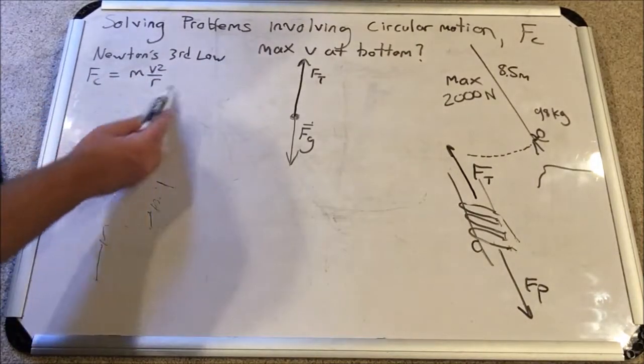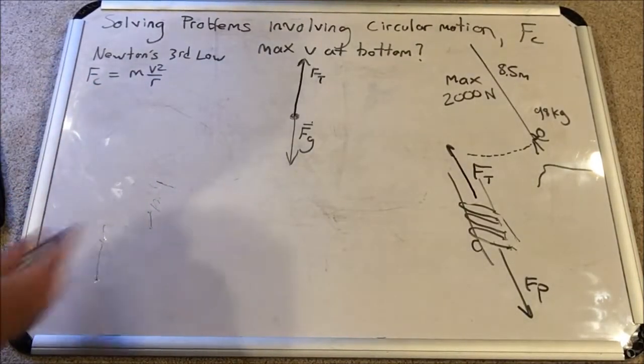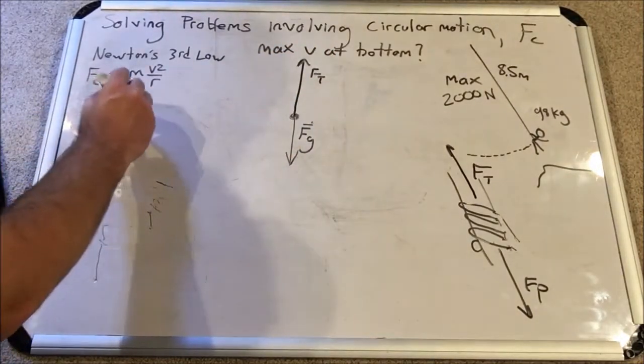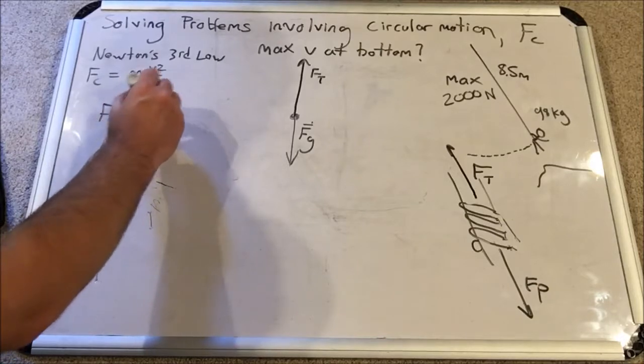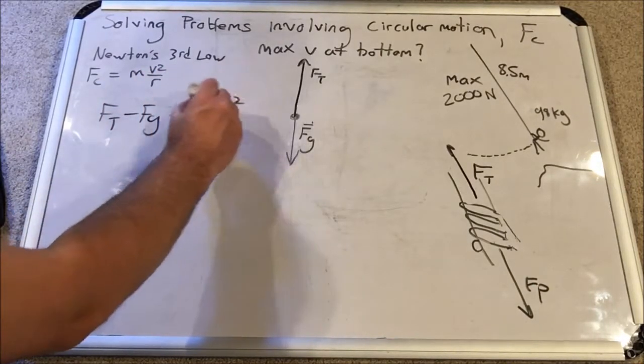Now, this is the equation we're going to use to find the velocity, but we had to figure out what fc was. It is the net of these two forces. So we can write force of tension minus force of gravity equals mv squared over r.